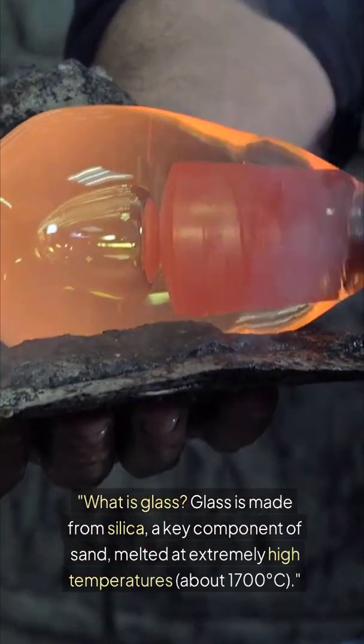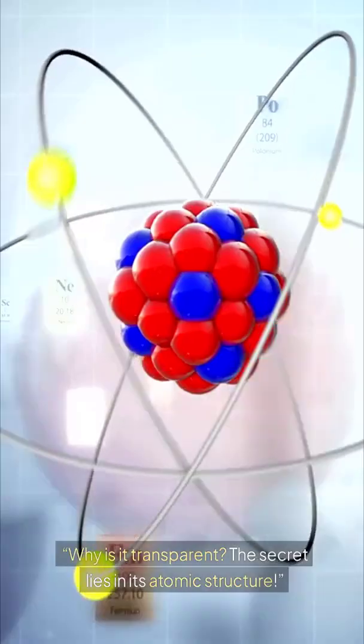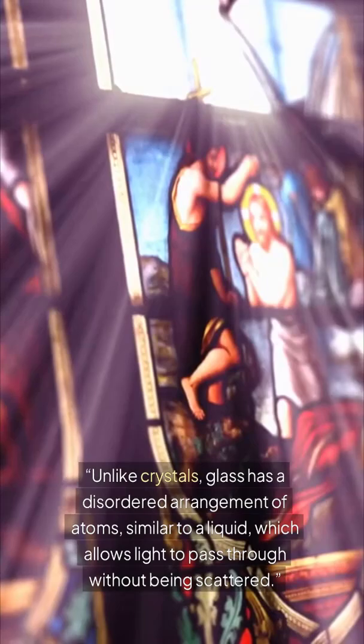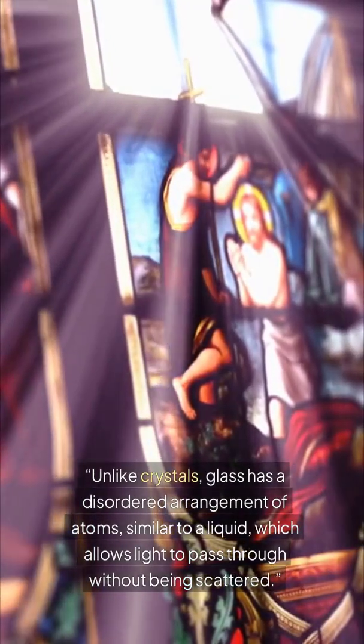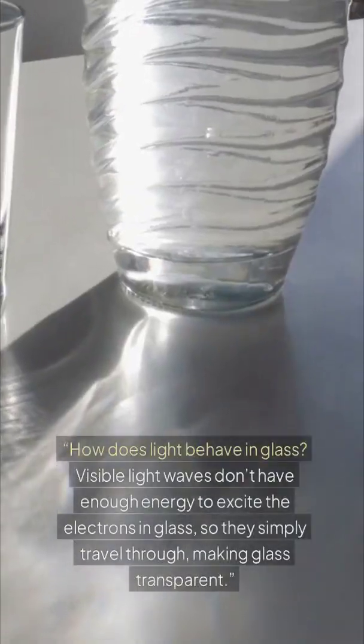Why is it transparent? The secret lies in its atomic structure. Unlike crystals, glass has a disordered arrangement of atoms similar to a liquid, which allows light to pass through without being scattered.